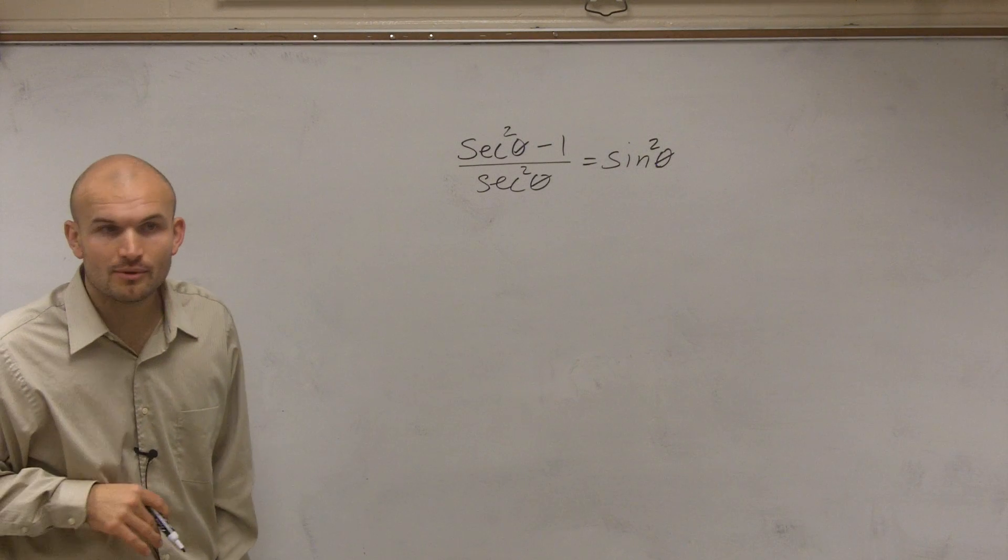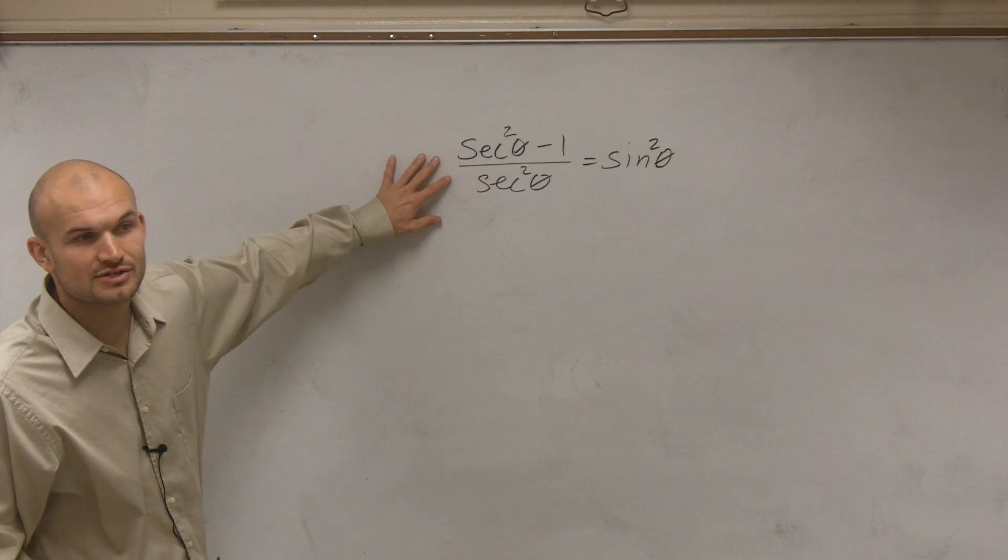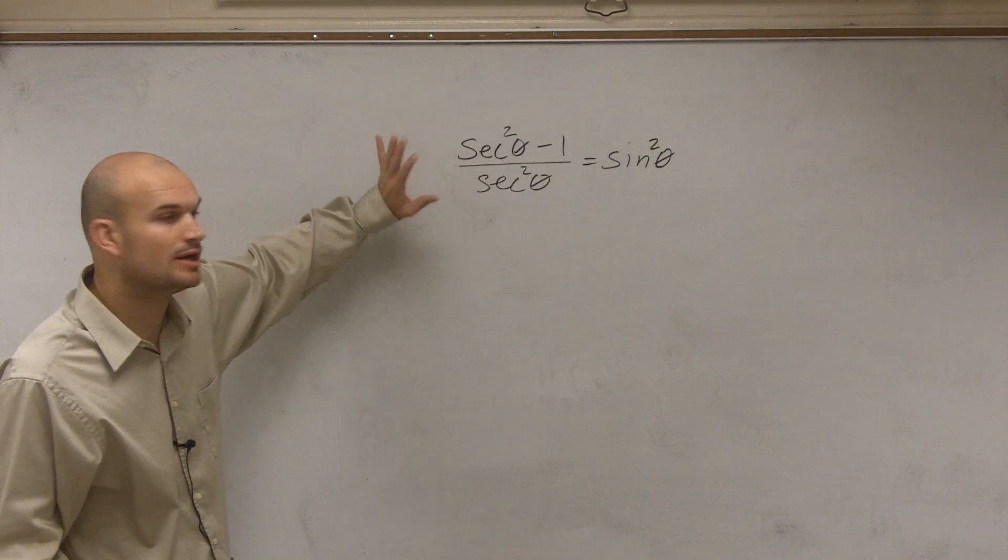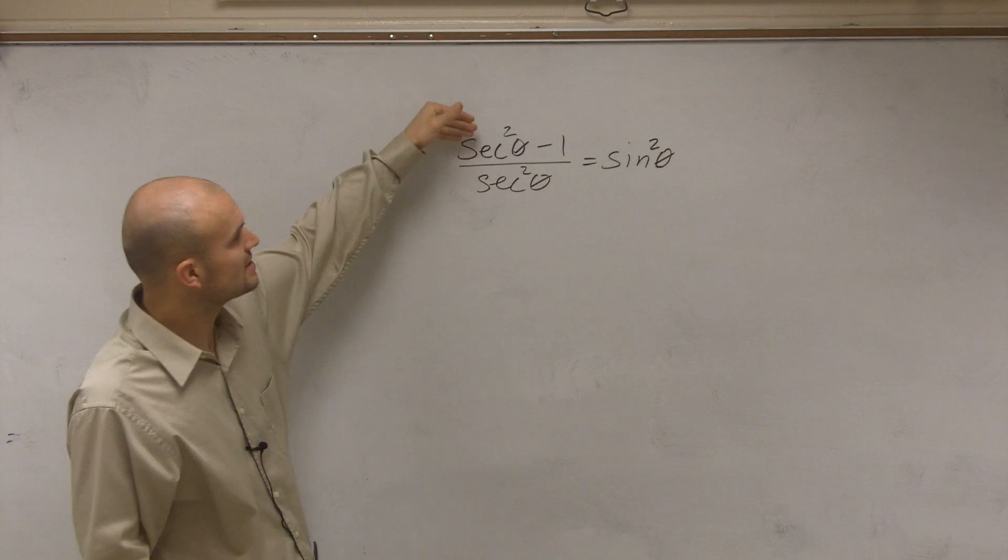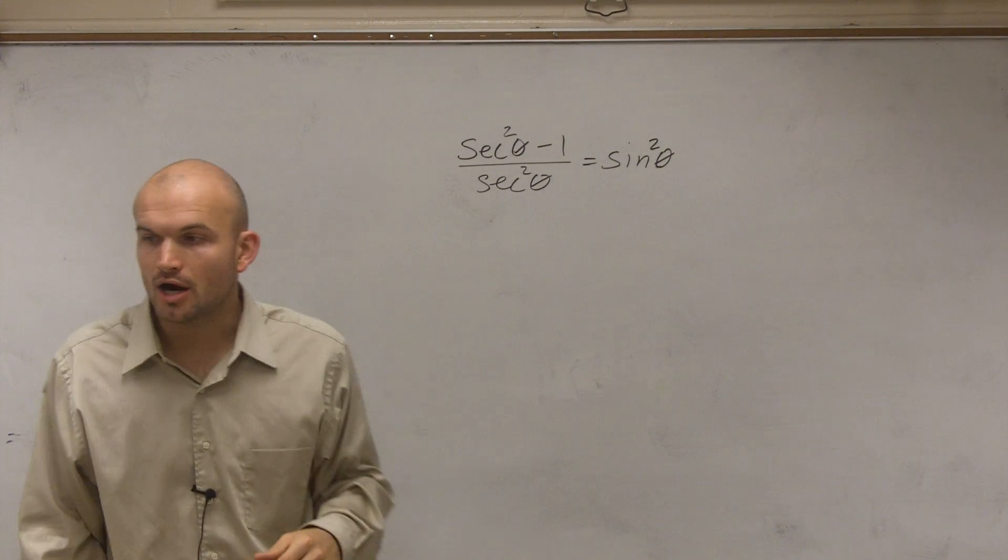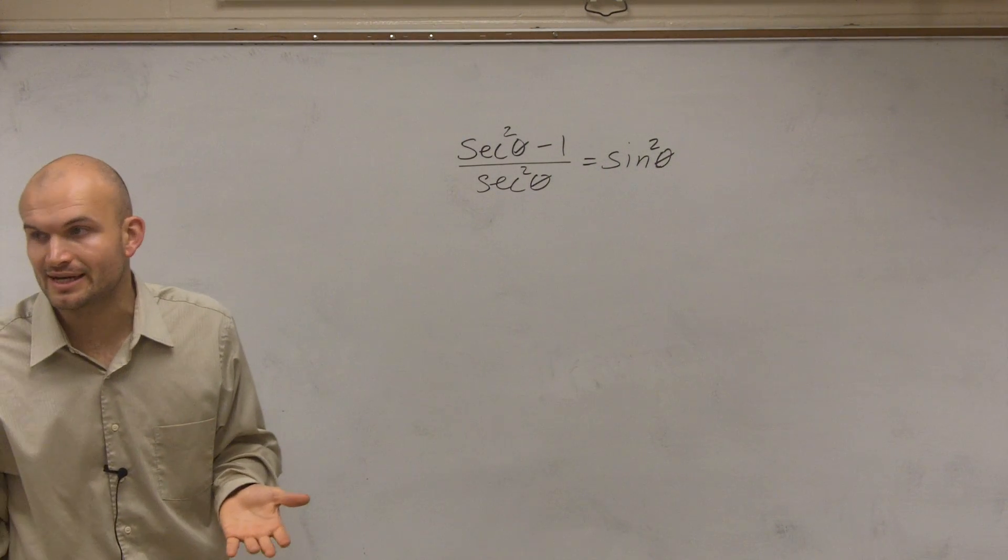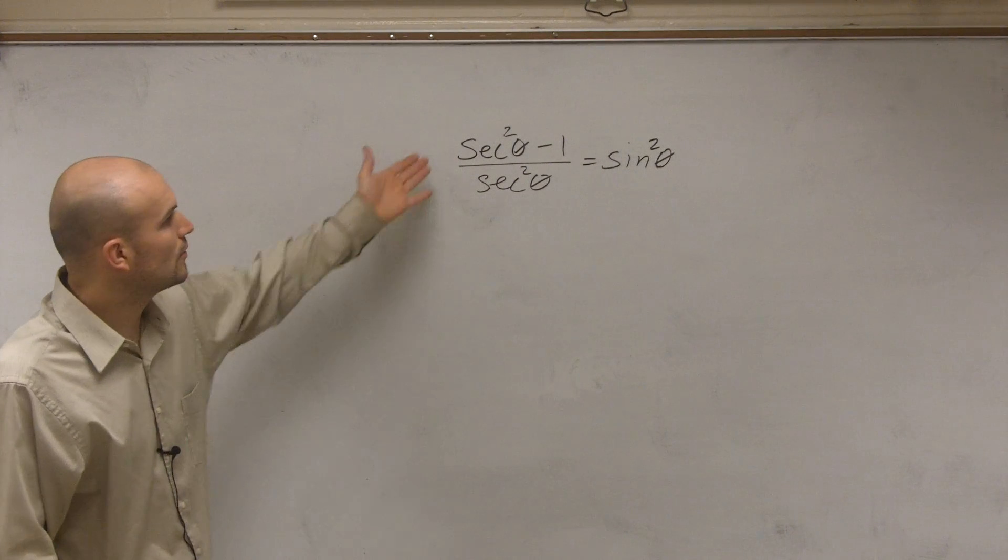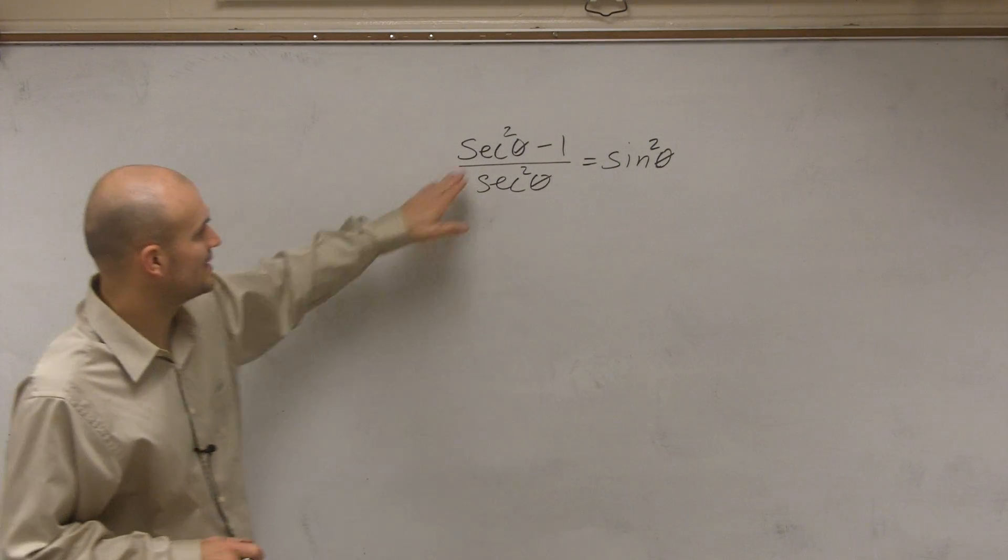So the first thing you're going to want to look at is, yes, you know you have a fraction. And there's one way you can do it by splitting it up. This way, the first way I'm going to show is let's transform our trigonometric identity and see what's going to happen.